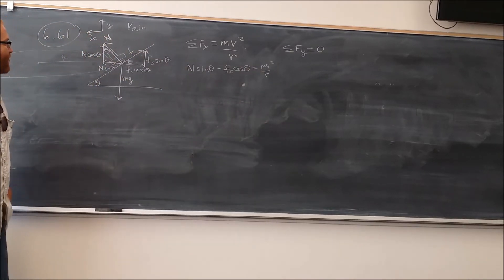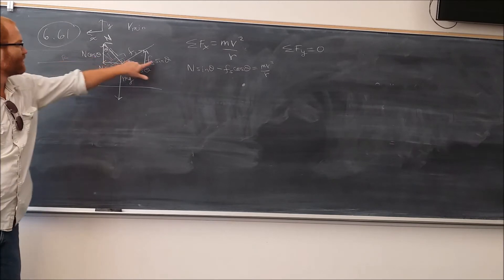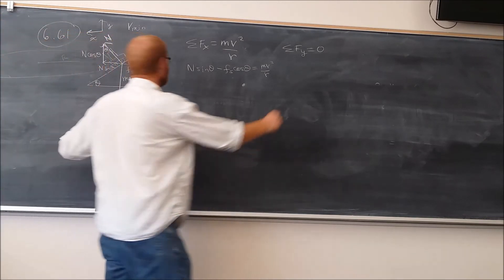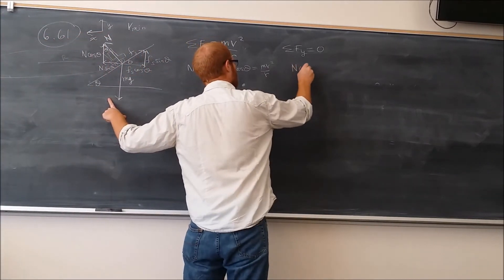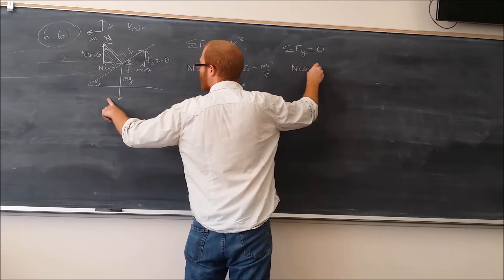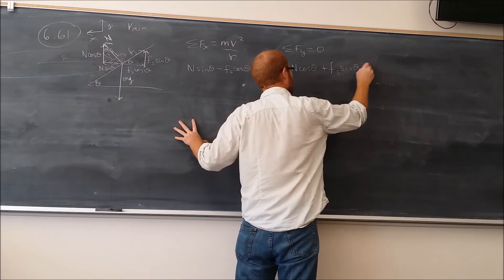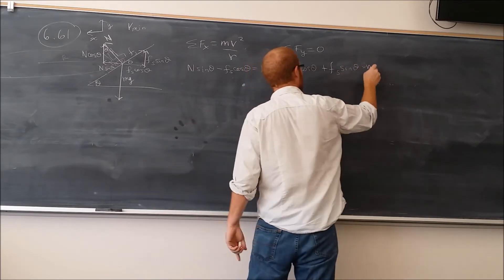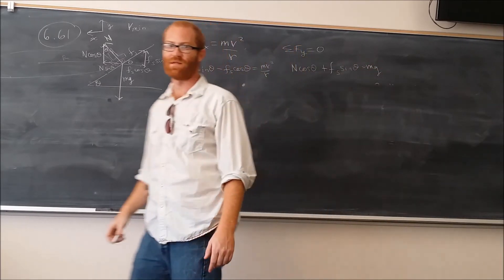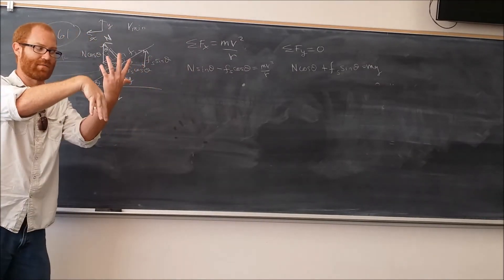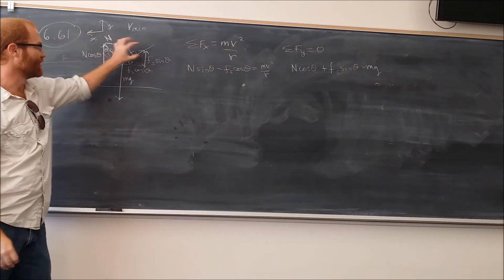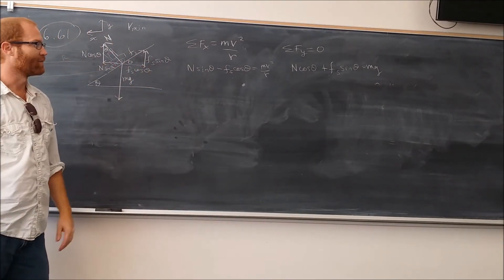In the y direction, we have three forces. This one, this one, and this one. Because it's all equal to zero, that basically means that the upward forces have to be cancelled out by the downward forces. And so, in this case, we have this one and this one cancelled out by that one there. So N cosine theta plus Fs sine theta minus mg equals zero.